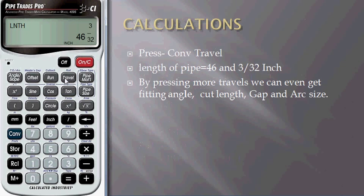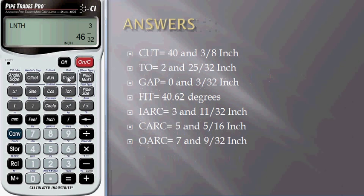If we press more travel, we can find fitting angle, cut length, gap, and inner and outer arc size. Press one more travel. We will have 40 and 3/8 inch as cut length.